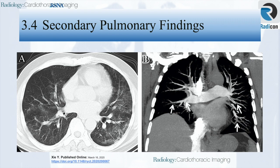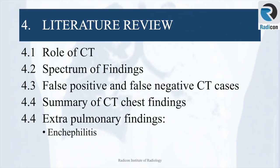In addition to airway and pulmonary parenchymal changes, there are secondary findings worth noting. In a 57-year-old man with COVID-19 pneumonia, a coronal MIP slab of CT pulmonary angiogram shows multiple bilateral filling defects involving lobar, segmental, and subsegmental branches of the pulmonary artery, in keeping with pulmonary embolism. A brief literature review will cover the role of CT, spectrum of findings, limitations, a summary, and the extrapulmonary spectrum.